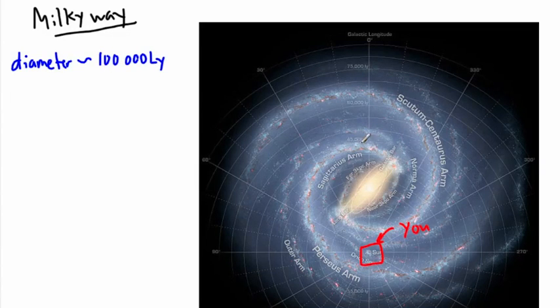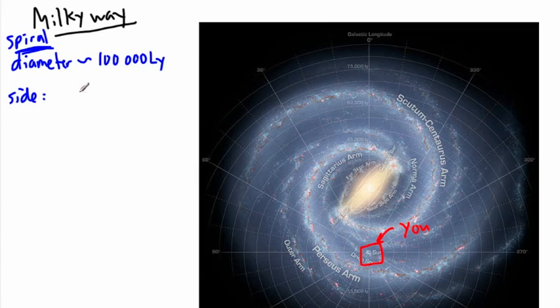But it's actually very flat. So ours is actually what's called a spiral galaxy. Now from the top view, it would be seen as a very wide thing like this. But from the side view, if we saw it from the side, it would actually be some sort of disc like this. So from the side, it's actually quite thin.